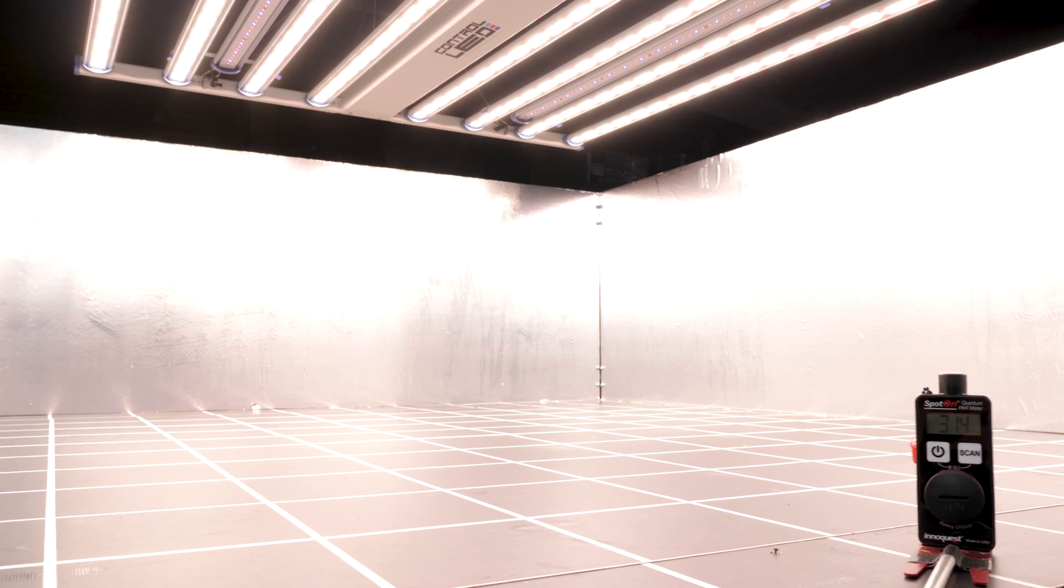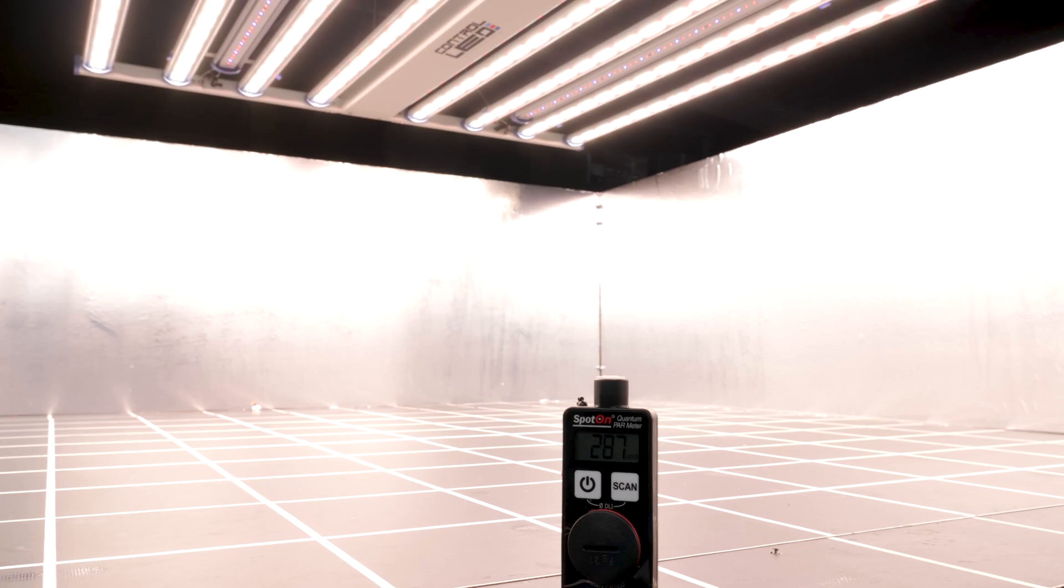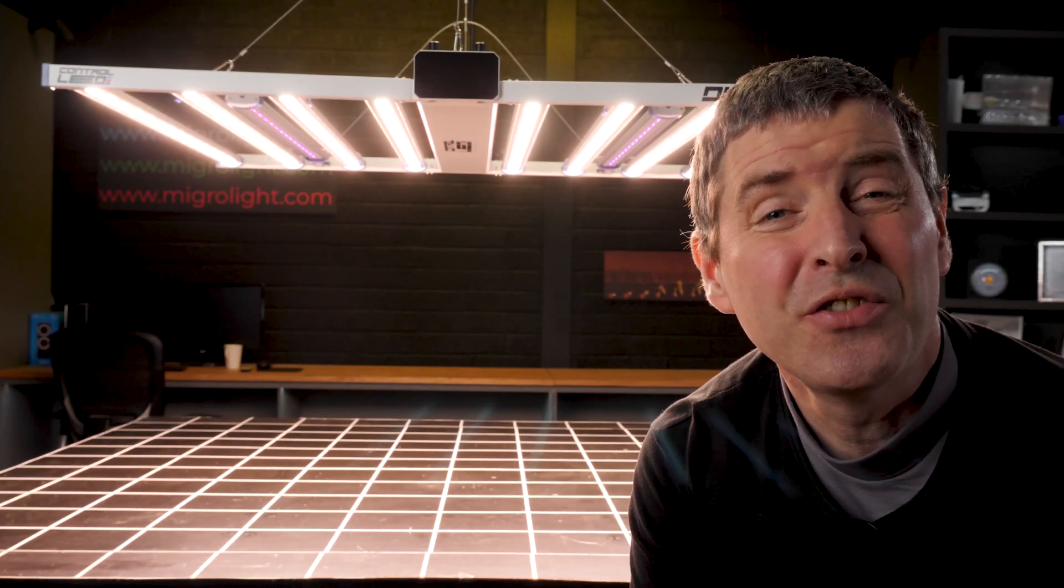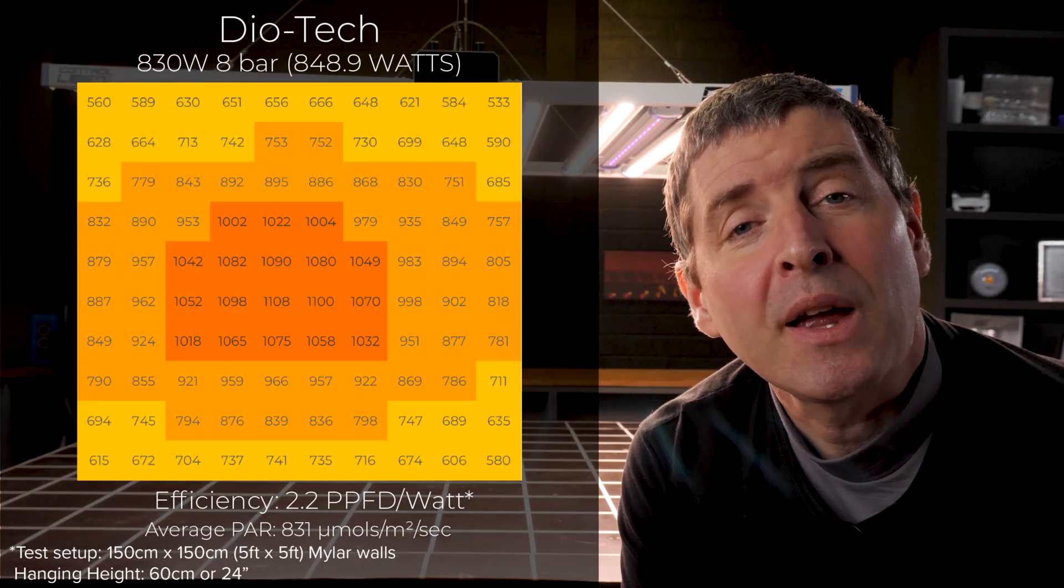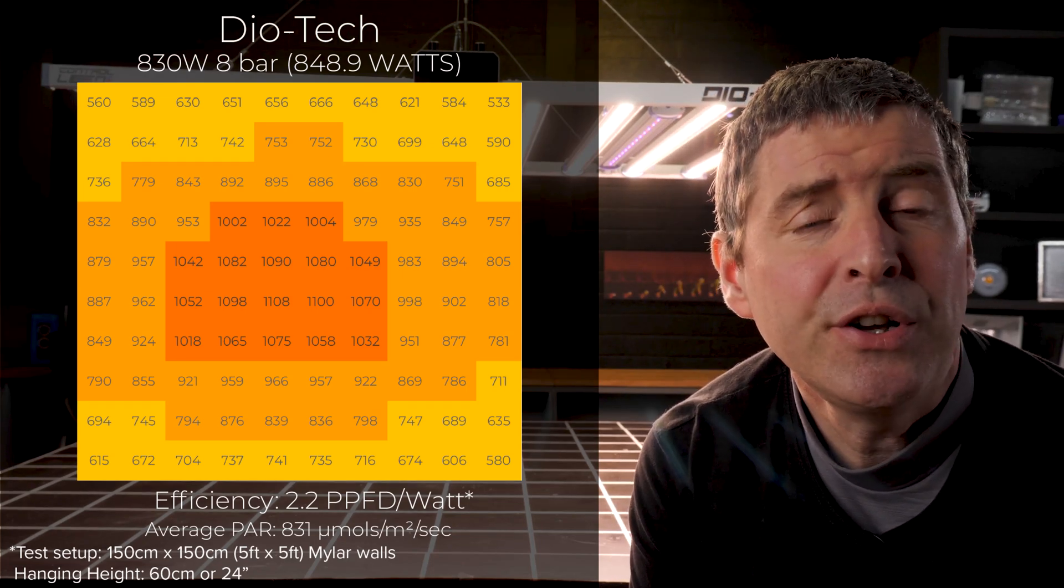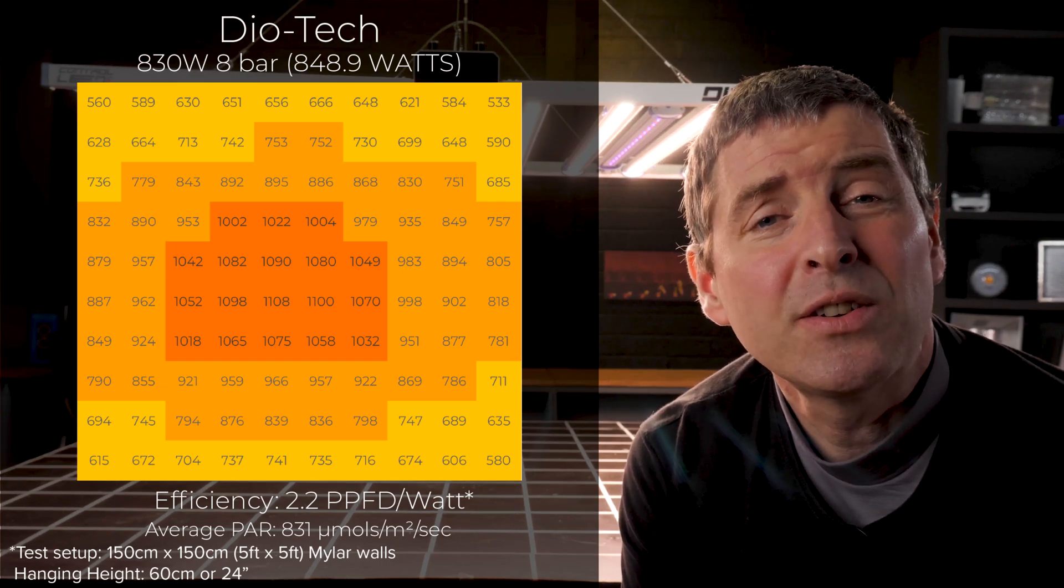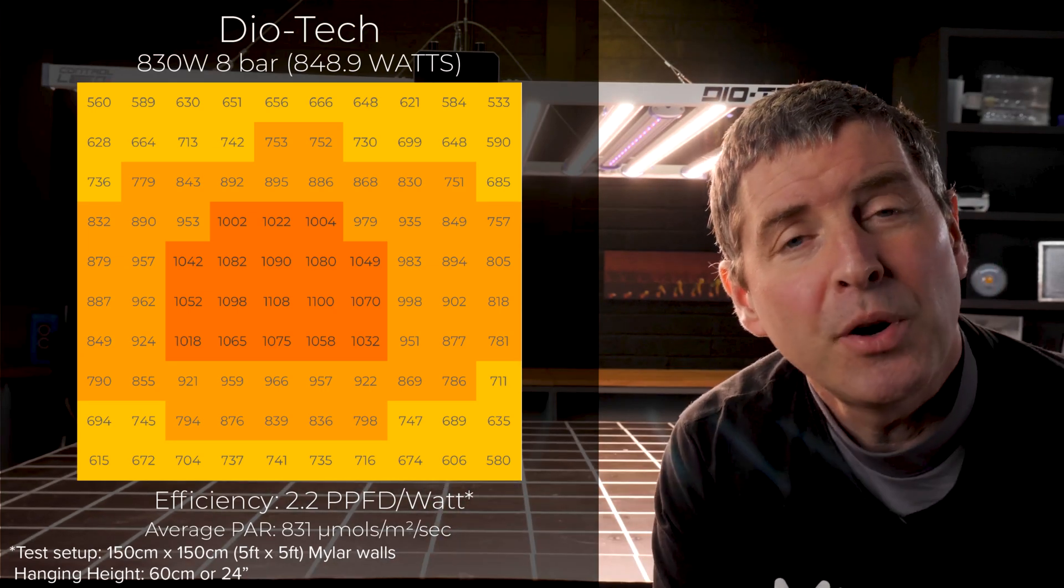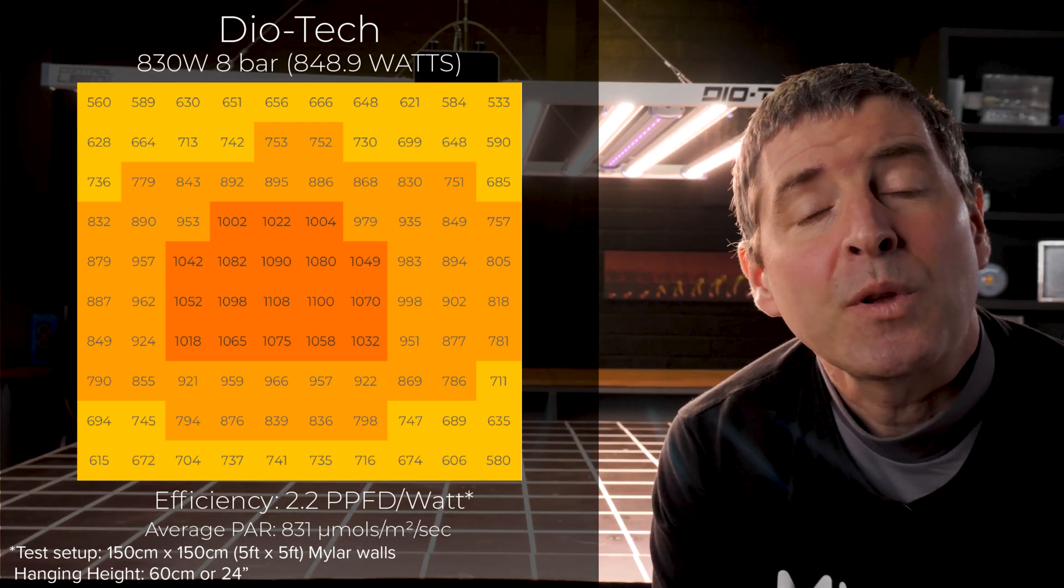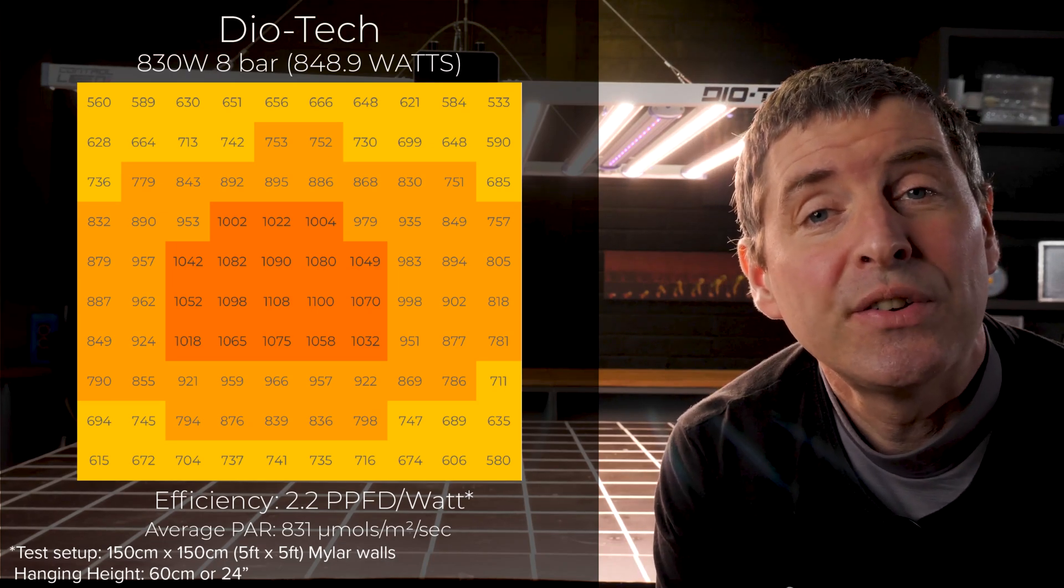So I ran it at 830 watts with the flowering setting on, and I got a really good result. So for the, well it's over 830 watts, actually 850 watts consumed, delivered an average PAR of 830 micromoles across the grow area, which is really good. Nice even distribution as well, and then a total system efficiency. So dividing the PAR output onto the plant canopy divided by the total watt consumed is 2.2 micromoles per watt, or usable PPF per watt, which is a really good efficiency result.